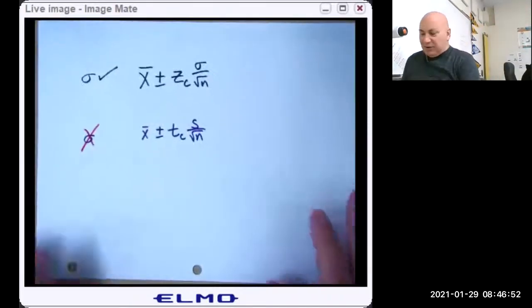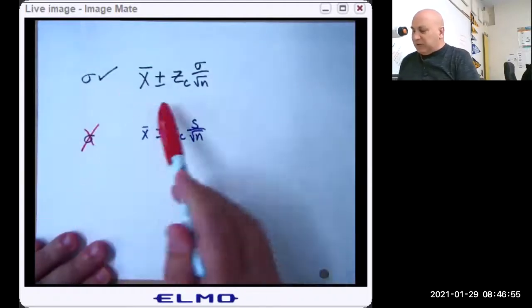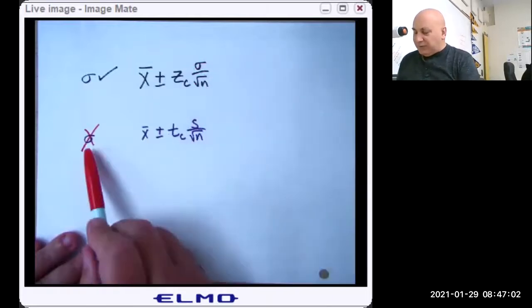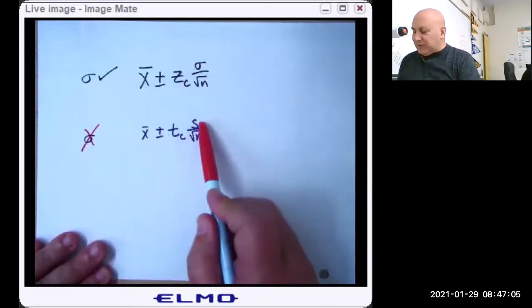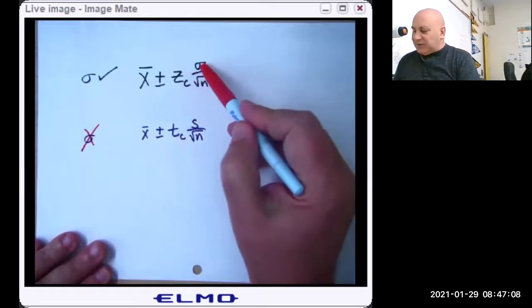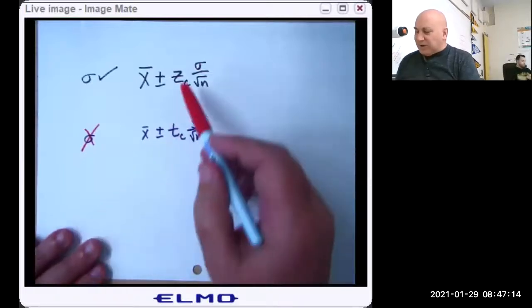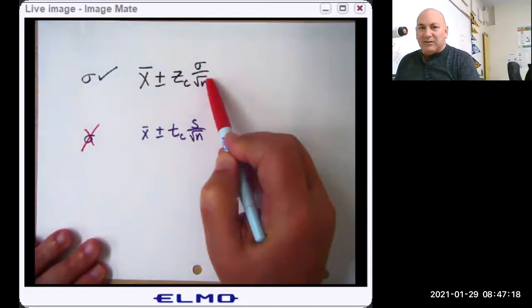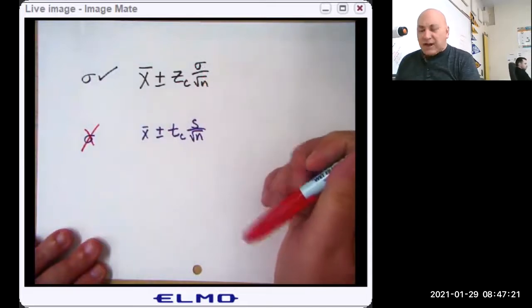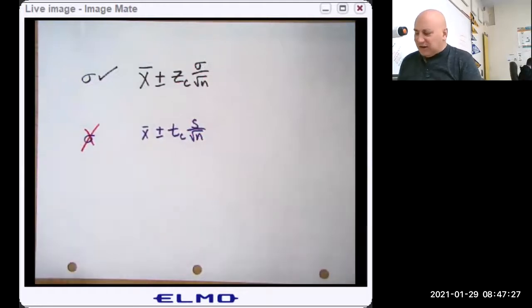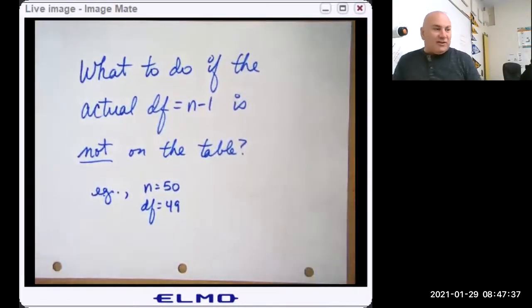So here are our two formulas. If you know sigma, here's the formula you use. And again, it's Z critical times sigma over root n is your margin of error. If you don't know sigma, it's T critical times S over root n. The sigma and the Z are always going to go together. The T and the S are always going to go together. You'll never have a Z critical times S over root n. In fact, if you remind me, there's a story about the guy who invented the T curve was doing that, was getting an error, and then he realized there was a mistake, and so he created the T curve.